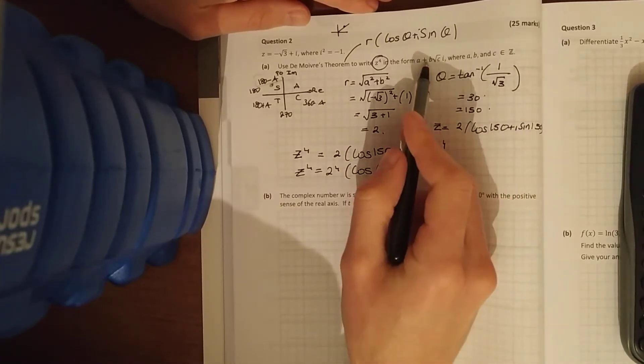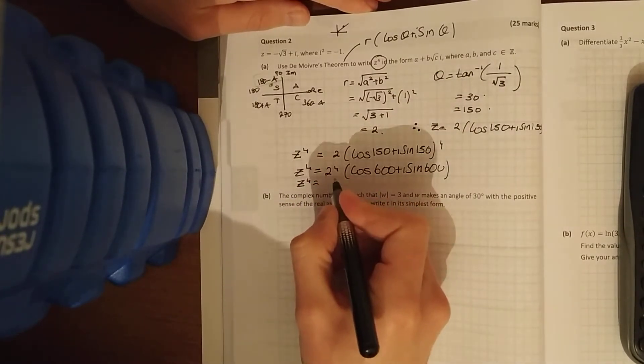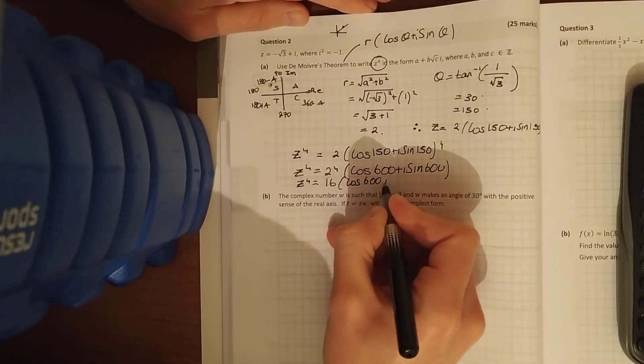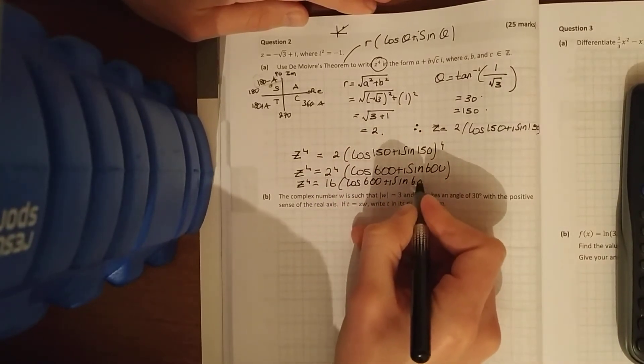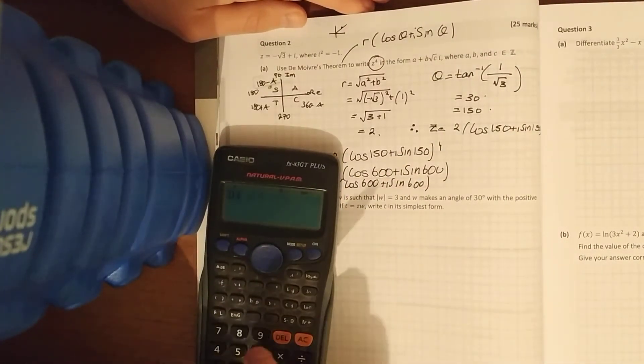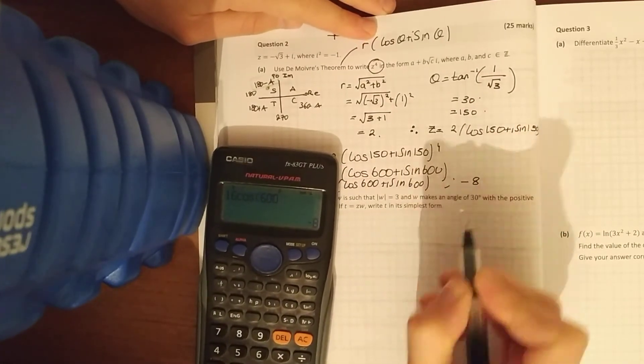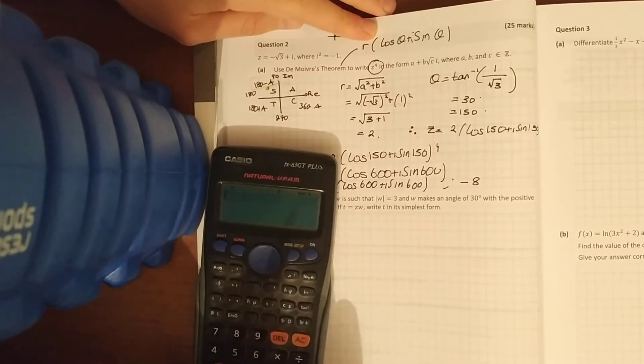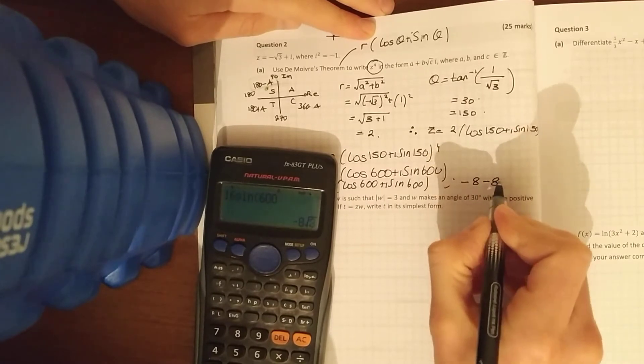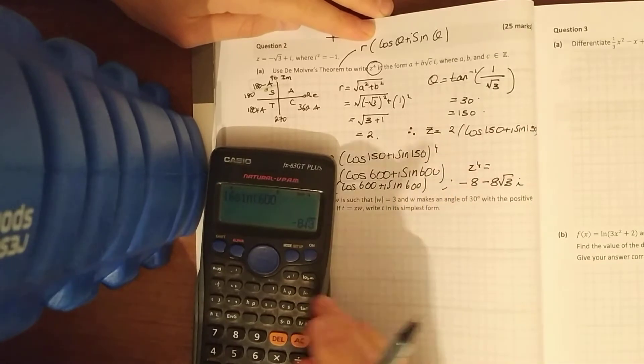Let's see what form do they want it in, that form there. So 2 to the power of 4, 2 to 4 is 16, cos 600 plus i sine 600, and you've got to throw these into the calculator individually. 16 cos 600 is minus 8, and 16 sine 600 is minus 8 root 3 i. And we're good, look at the form they wanted it in, there we go, so z to the 4 is equal to that.